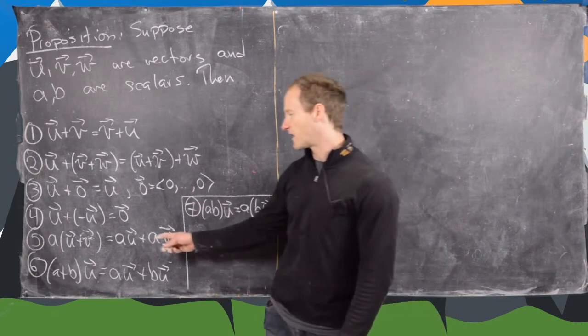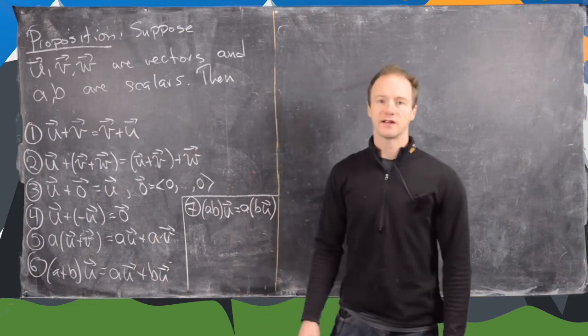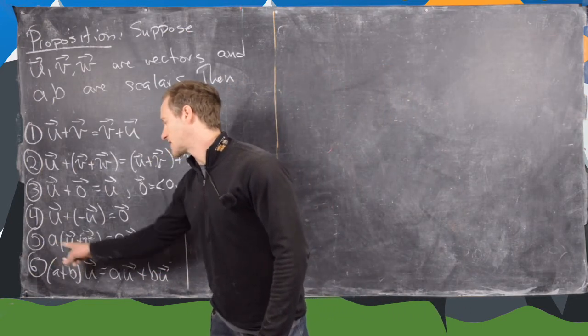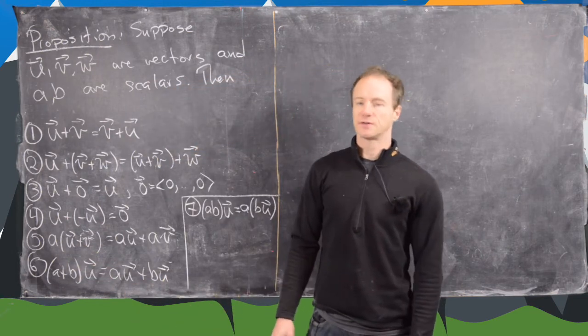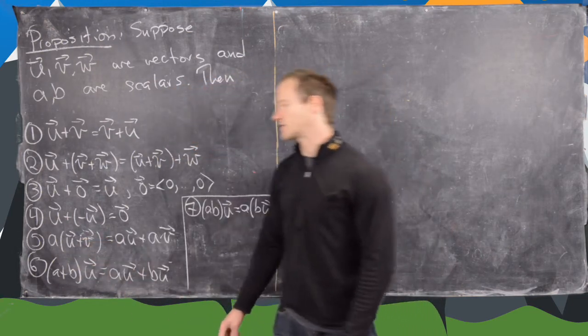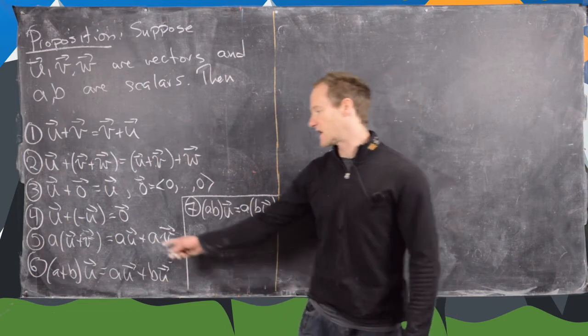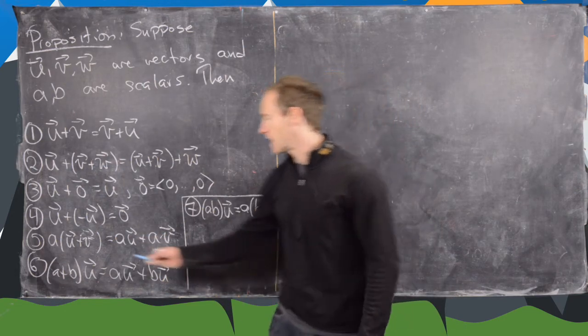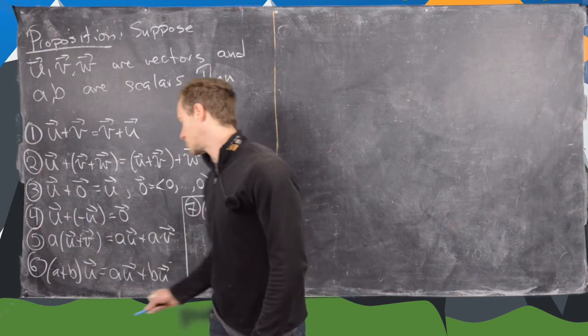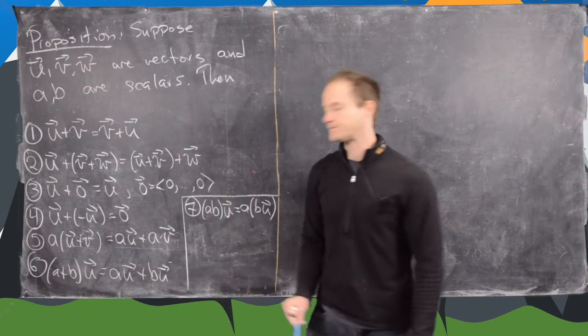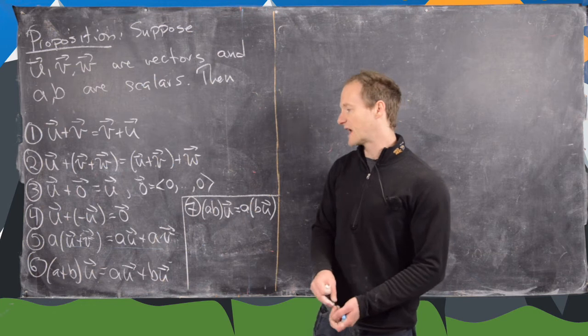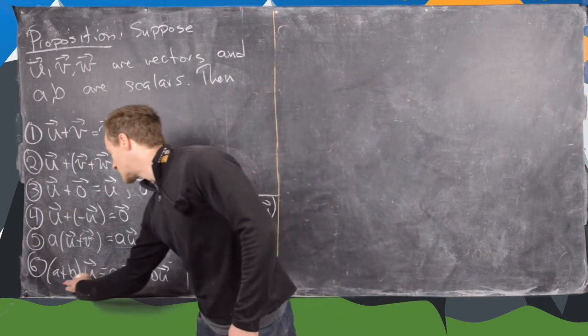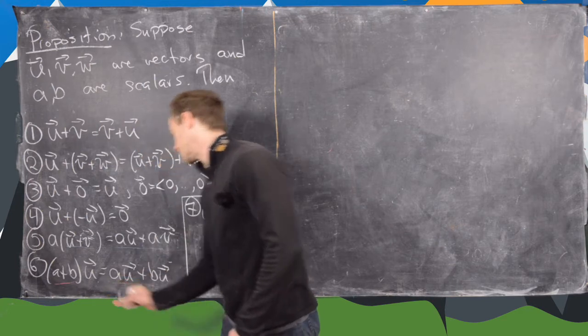And then we have these two distributive rule things. So this is the distributive rule for one scalar multiple and two vectors. So this is a times vector addition u plus v is the same thing as au plus av. And now this is important because here this is vector addition and this is vector addition compared with the second such property.